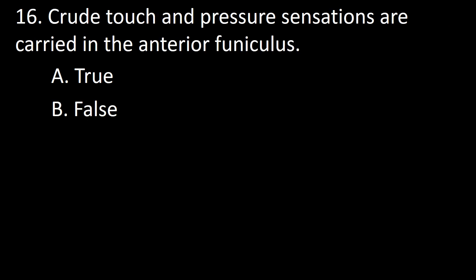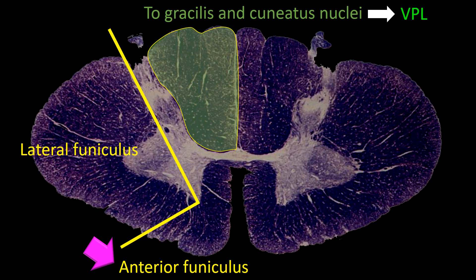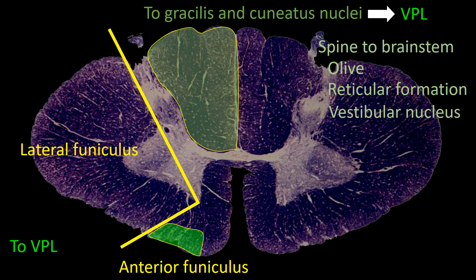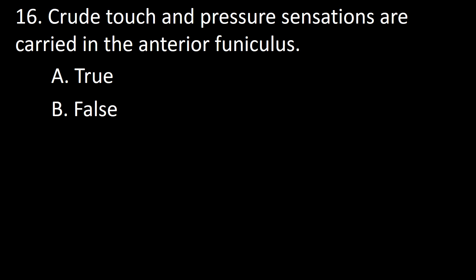Next question: crude touch and pressure sensation is carried in the anterior funiculus — true or false? The anterior funiculus contains ascending and descending tracts. One of the largest ascending tracts originates in the contralateral dorsal horn and terminates in the ventroposterior lateral thalamic nucleus, carrying crude touch and pressure sensation. Other ascending tracts in this funiculus are directed towards brainstem nuclei — the olive, the reticular formation, and the vestibular nucleus. So the answer is true.